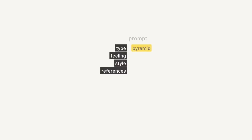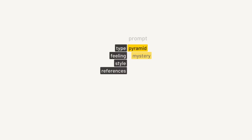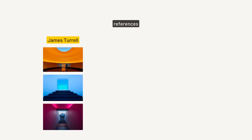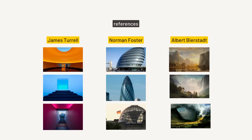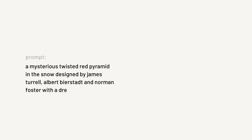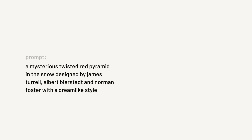Let's try something different. Let's select a well-defined type of architecture like a pyramid, choose a feeling like mystery, select a style — maybe dreamlike — and finally some reference artists like James Turrell, Norman Foster, and Albert Bierstadt. The final prompt looks something like: a mysterious twisted red pyramid in the snow designed by James Turrell, Albert Bierstadt, and Norman Foster with a dreamlike style. These are the four images that were generated.